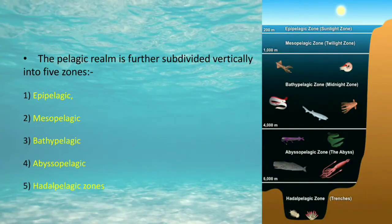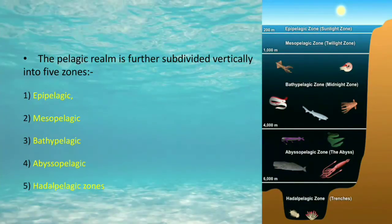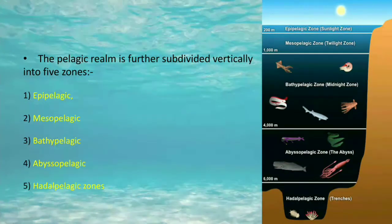The pelagic realm is also further subdivided vertically into five zones. So the pelagic realm is divided horizontally into neritic and oceanic, and vertically into five zones. We will now study all these five zones in detail.